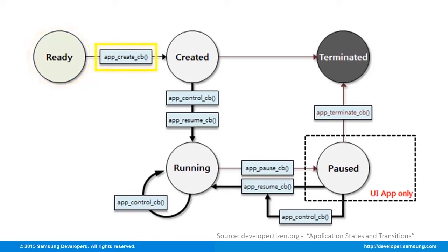The app create callback is executed, starting the main loop. The app is already in the created state. From the created state, for it to shift to the running state, the app resume callback is in charge of making the application visible. Since the app is up and running, it is visible and available for the user's demands.